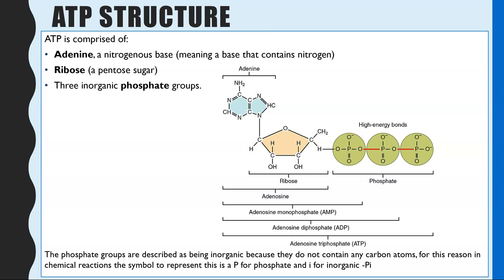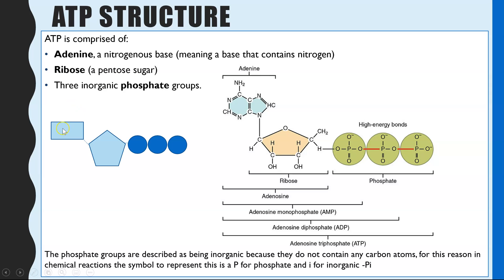The pentose sugar it contains is ribose. The final structure is the three phosphate groups, which are inorganic phosphate groups because they do not contain any carbon atoms — just phosphorus and oxygen. In a word or symbol equation, it may be shown as P or Pi to indicate inorganic phosphate. For AQA, you just need to know the shape: an adenine base, ribose sugar, and three inorganic phosphates.